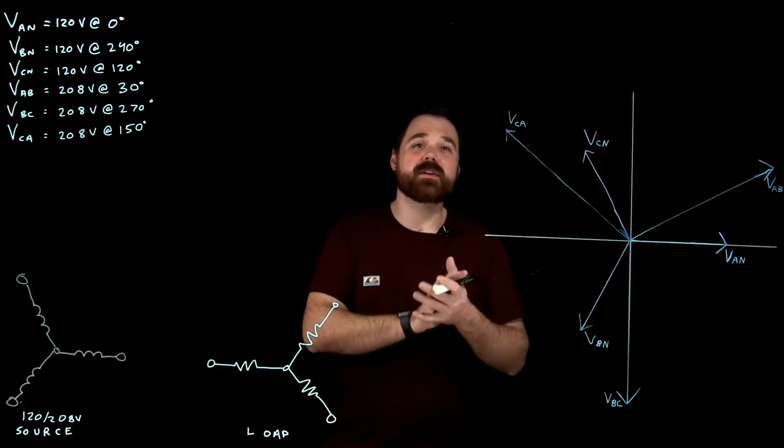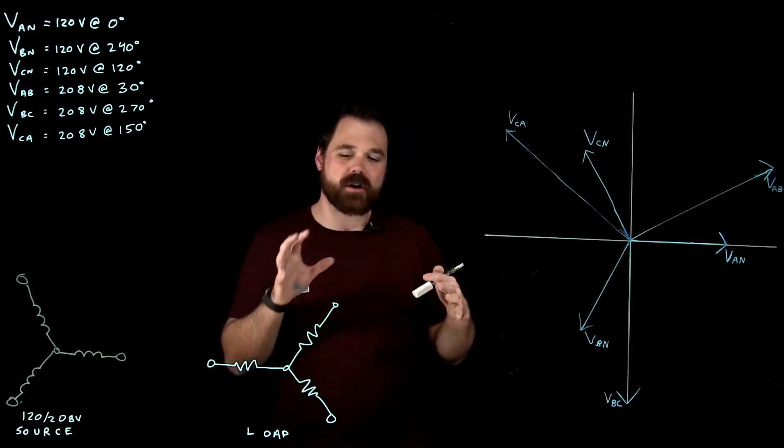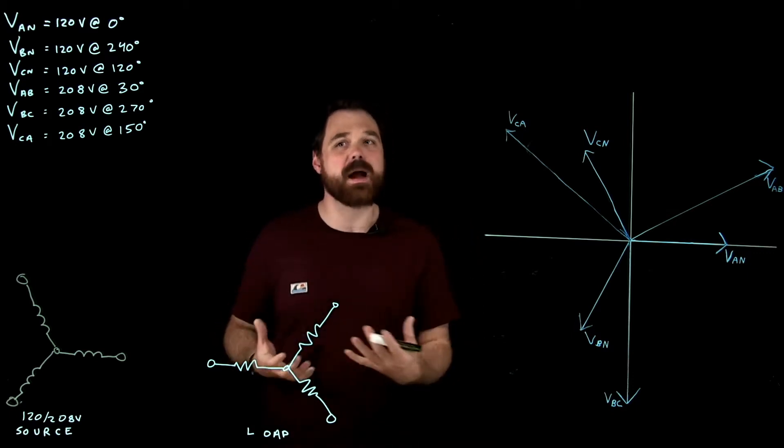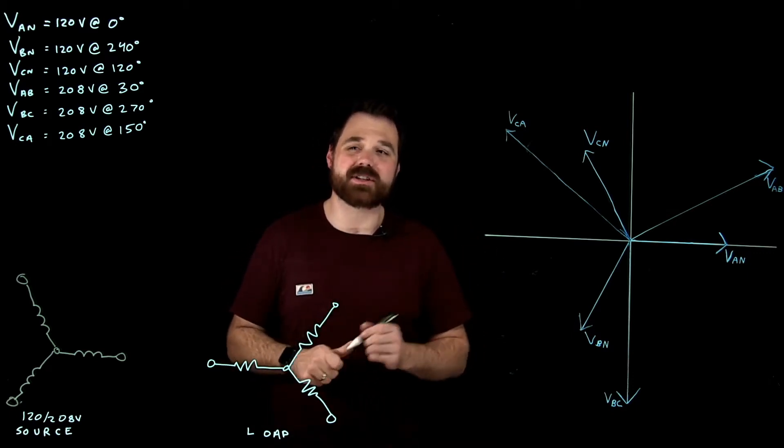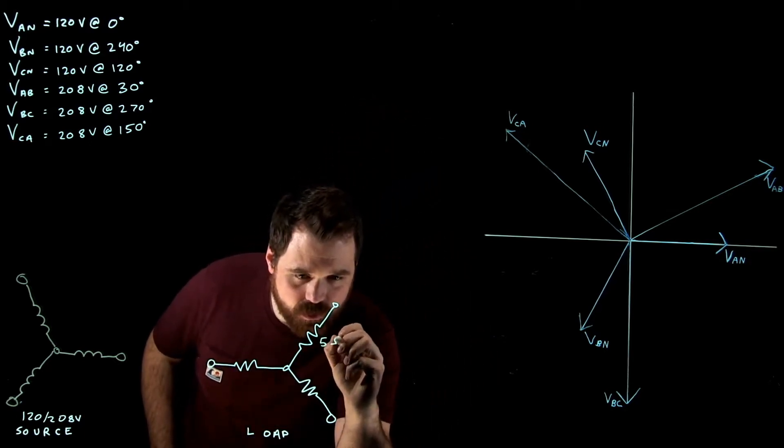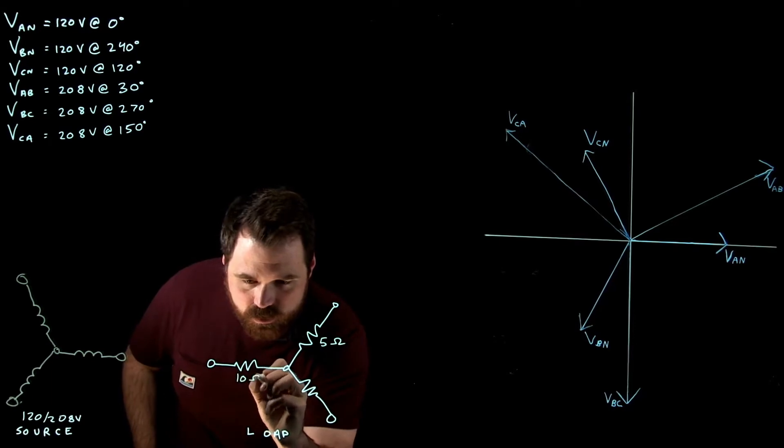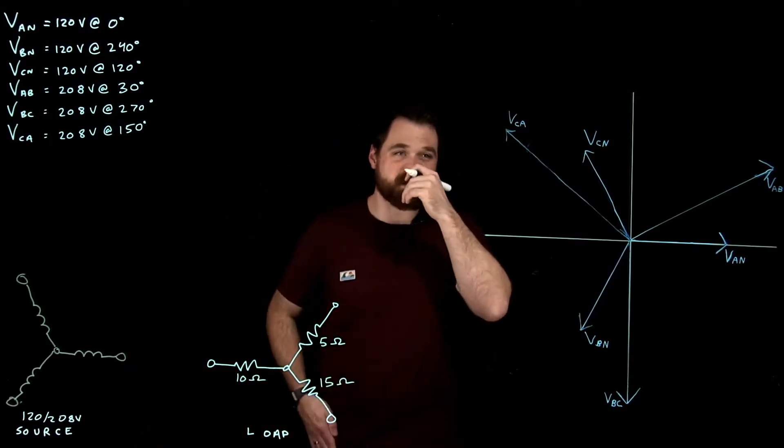So I've got a bunch of other videos discussing balanced loads, which I encourage you to check out. But basically what we're going to talk about here is all of these resistors are going to have the same power factor. But we're going to say that they have a different impedance or a different resistive value. So I'm going to assign 5 ohms, 10 ohms, and 15 ohms to these resistors.